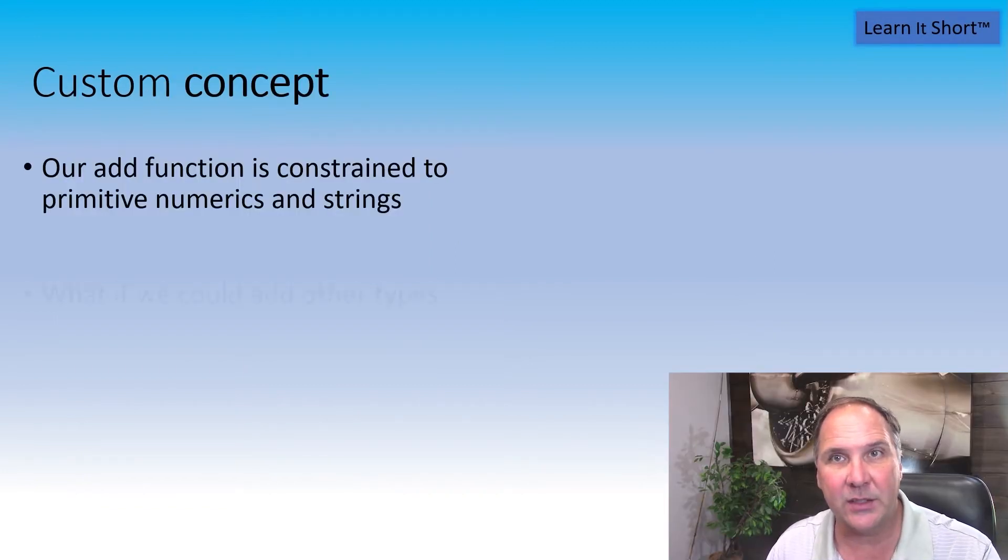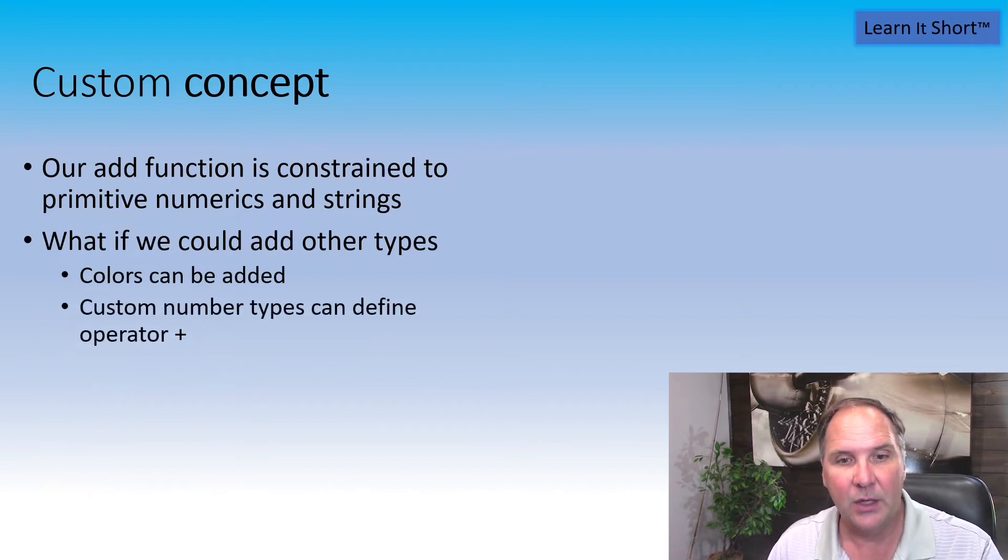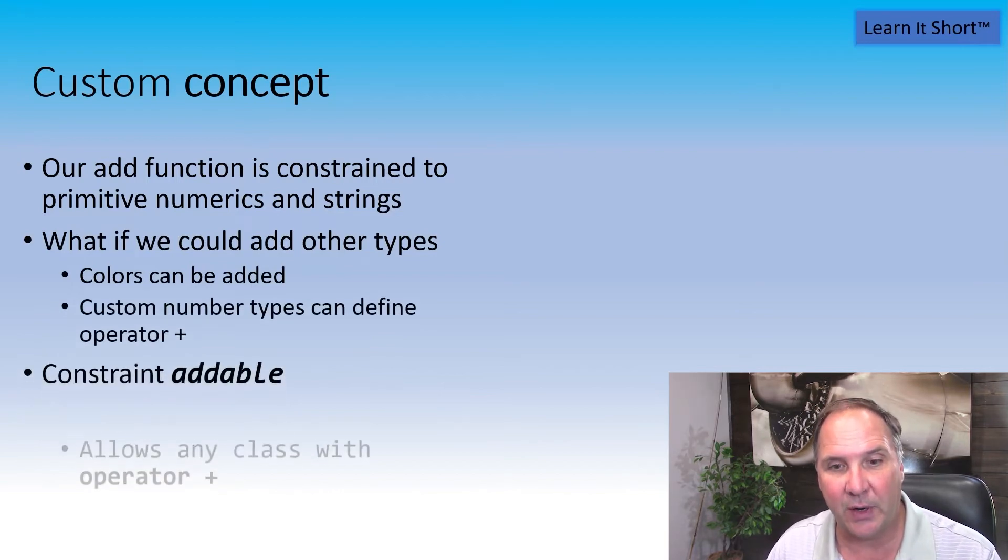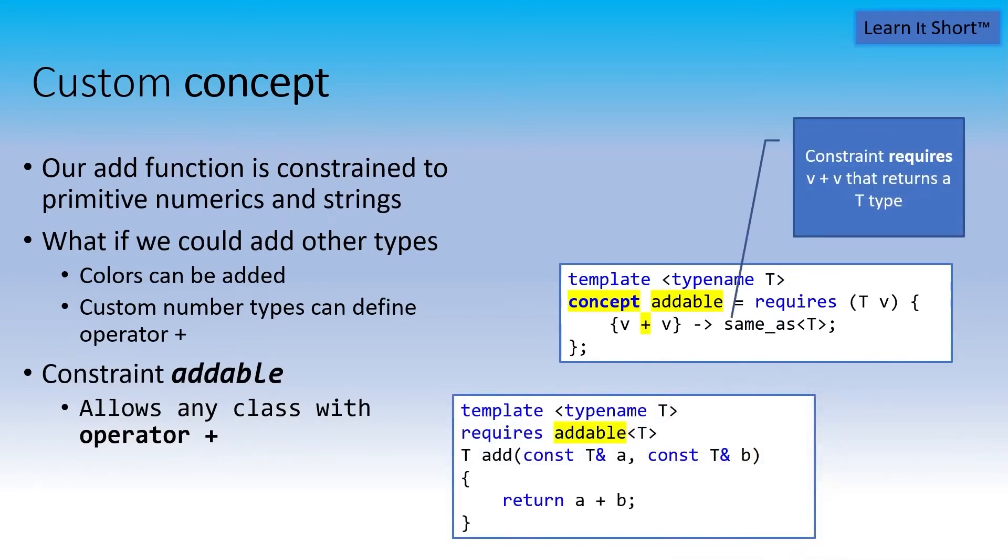But what if there's a color class and colors can be added with the plus sign? Other types can do that. So let's create a custom constraint called addable. Our addable custom constraint requires that the two objects can be added together using the plus sign and that the result of that operation is the same type as the parameters being passed in.